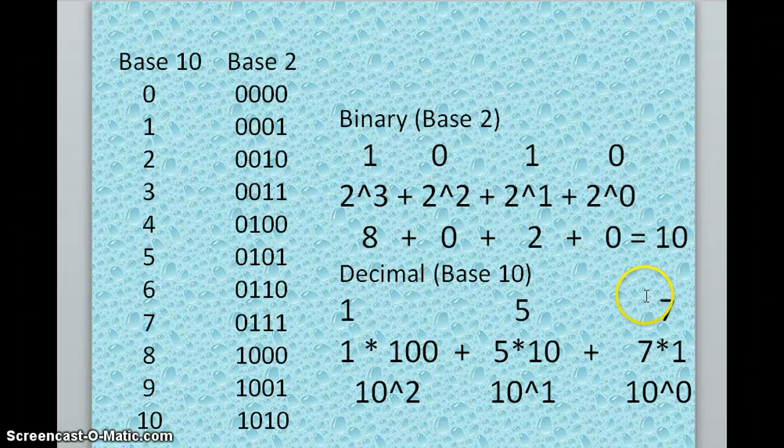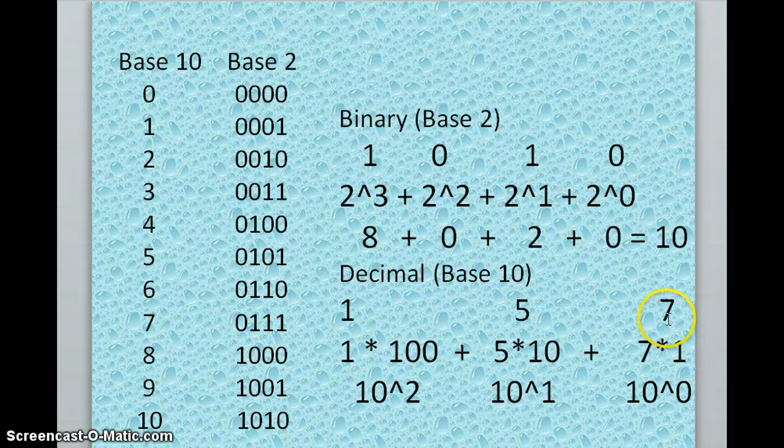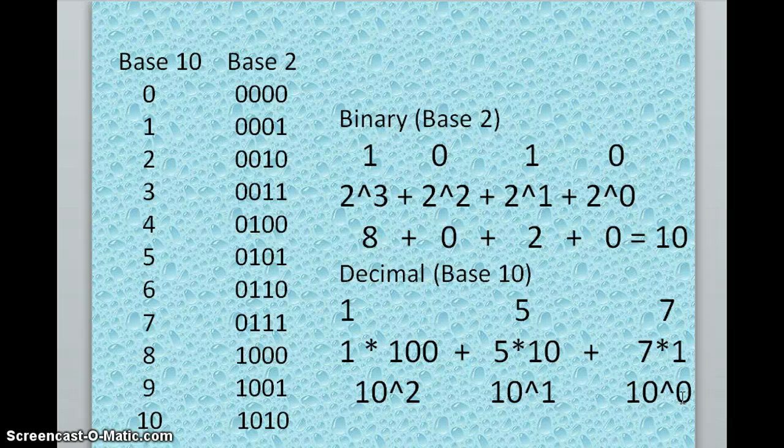Now you're going to take the value that is in that ones place and multiply it times that through the zeros place, because that's the exponent—exponent is 0. 7 times 1 would be 7.